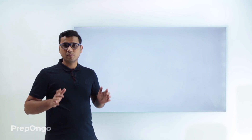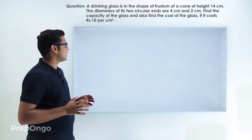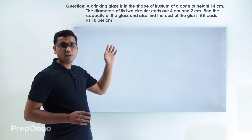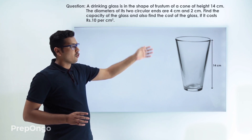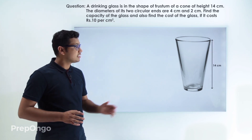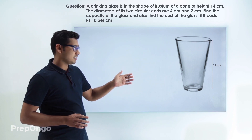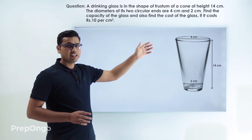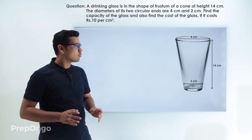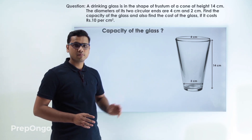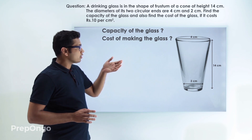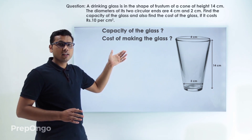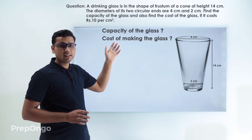Hello everyone. Let's have a look at an example of frustum of a cone. We are given a glass which is in the shape of a frustum of a cone. Its height is 14 centimeters, and the diameters of the circular ends are 2 centimeters and 4 centimeters respectively. We have to calculate the capacity of this glass and also find the cost of making it, given that the cost of glass is rupees 10 per 100 centimeters square.